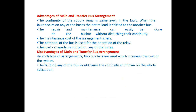The continuity of supply is maintained even during a fault — when a fault occurs on any one bus, the entire load is shifted to the other bus (transfer bus). Repair and maintenance can be done on the bus bar without disturbing continuity. The maintenance cost is low, and the load can easily be shifted to any other bus. Disadvantages: a fault on any bus causes a complete shutdown of the whole substation.